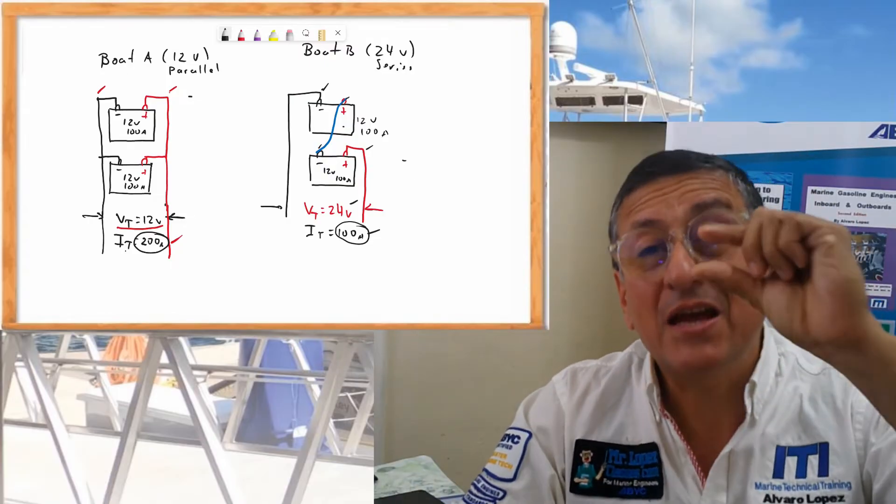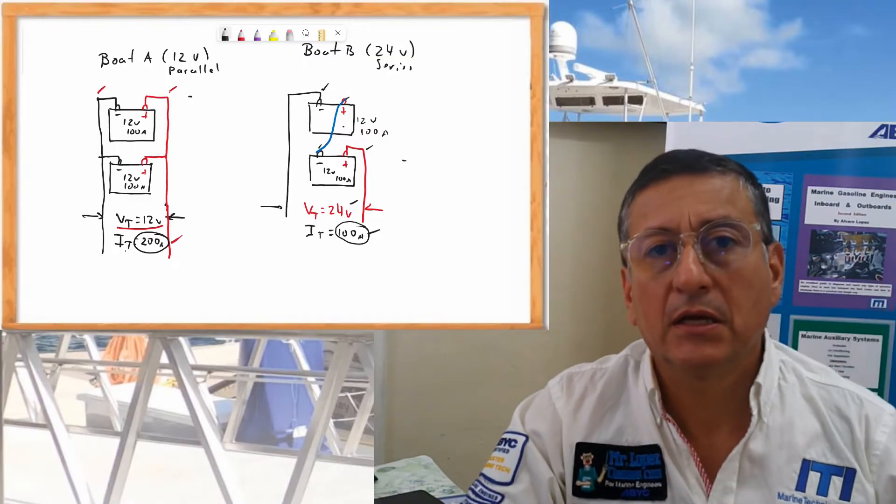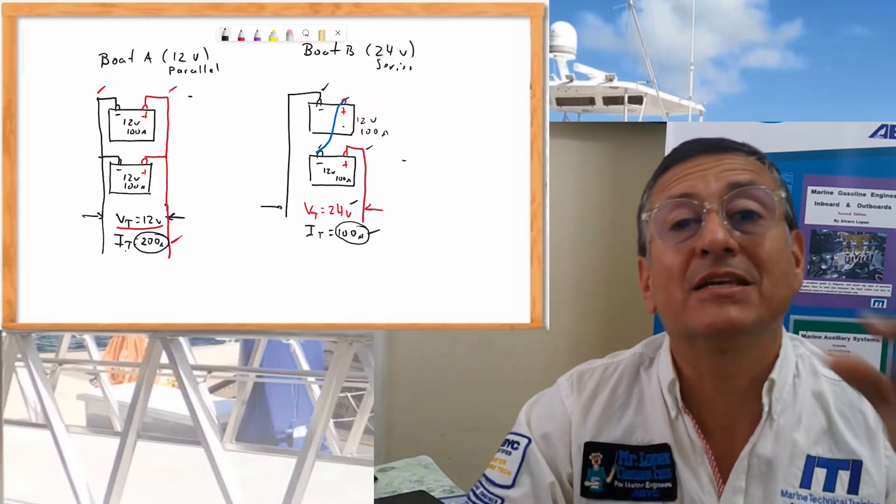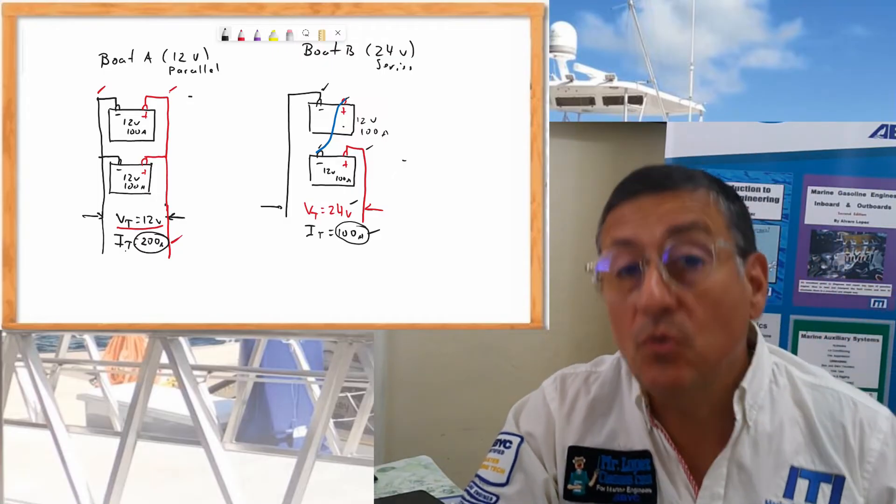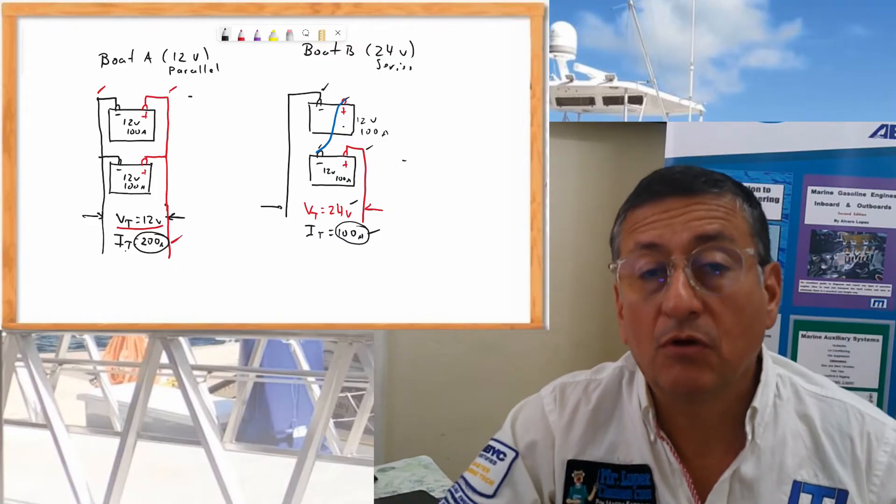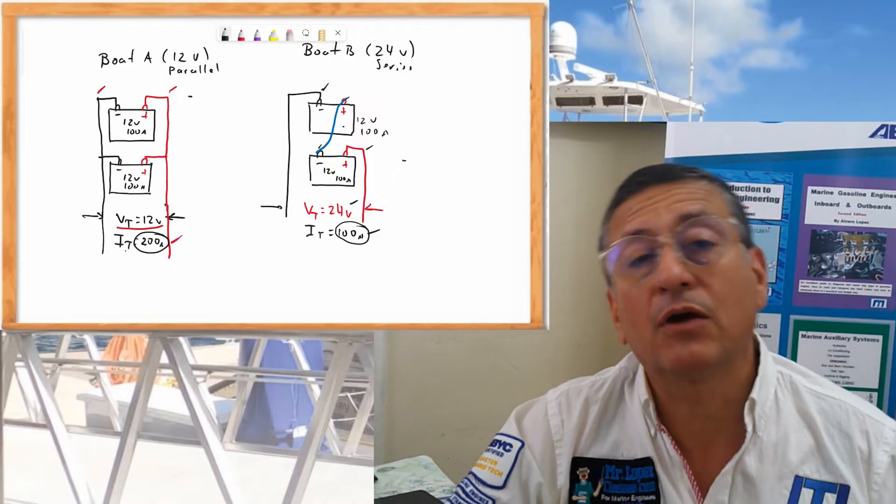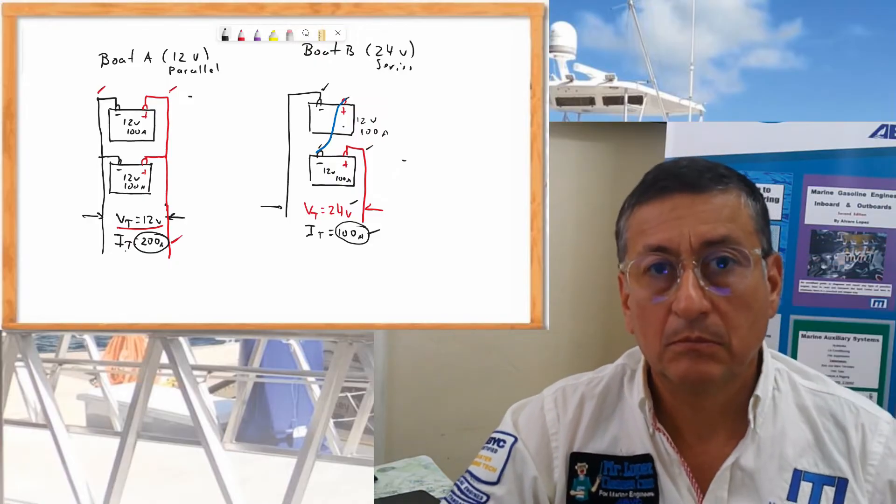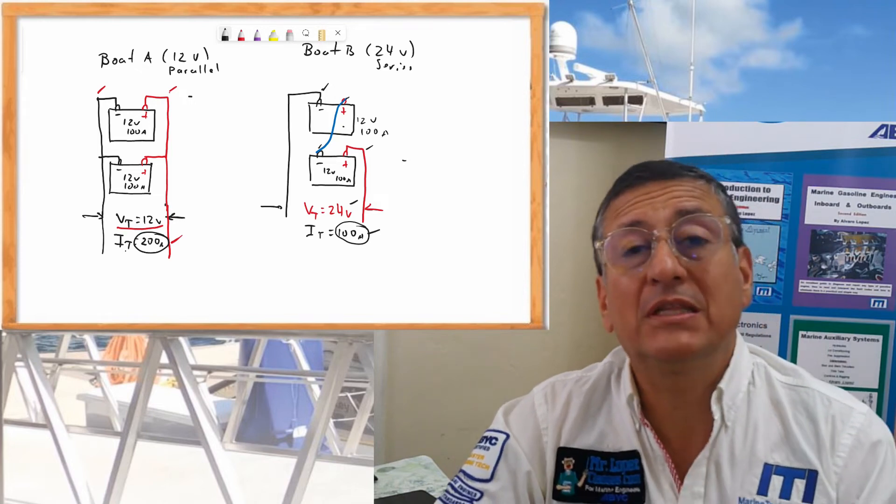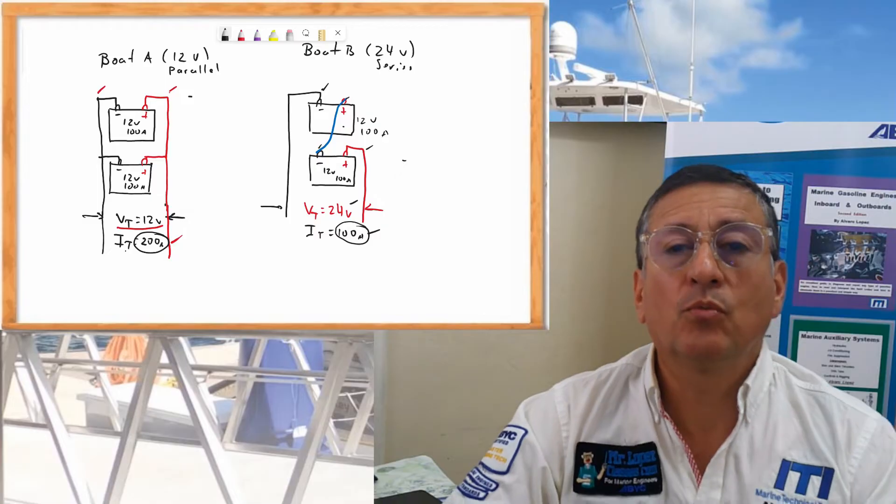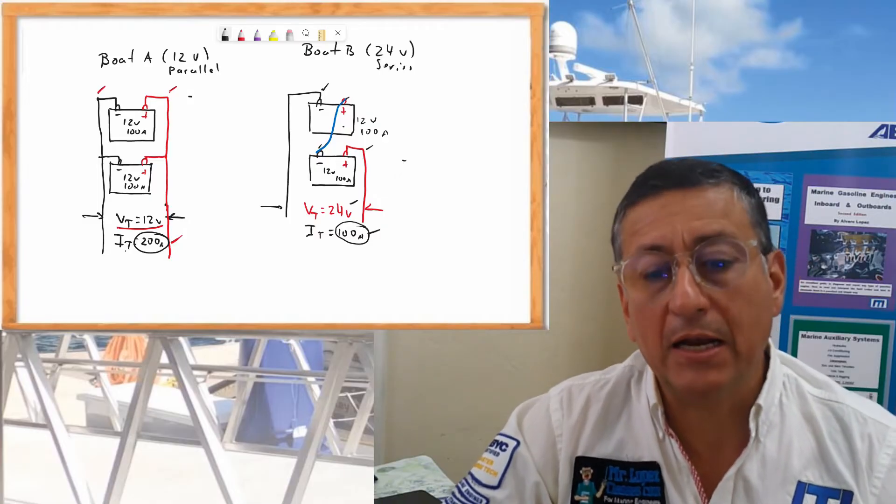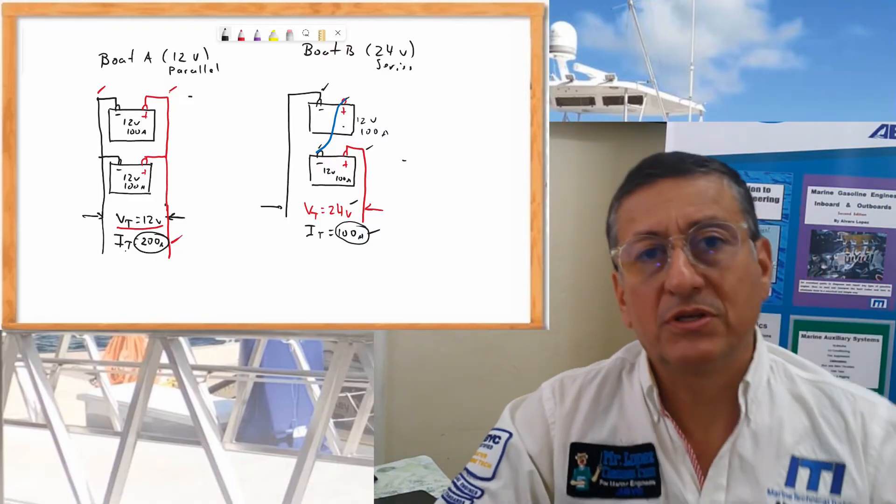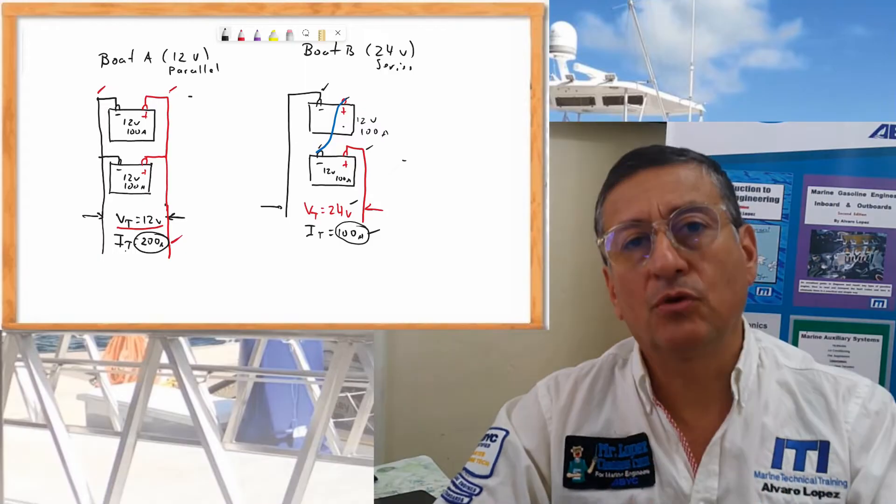Number one, the thickness of the cables, the gauge of the wires in parallel is bigger. In series is smaller wires. This is great because in a big boat, configuring the boat in general in 24V, I am going to use wires with less diameter, less gauge. Because the flow of electricity is less in series in comparison with the flow of electricity which is bigger in parallel. Number one, important. I have bigger cables, thicker cables in parallel in comparison with series.